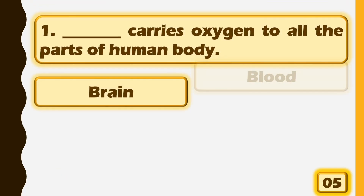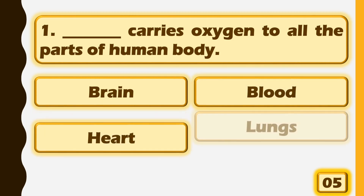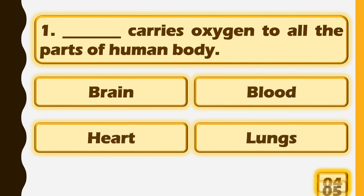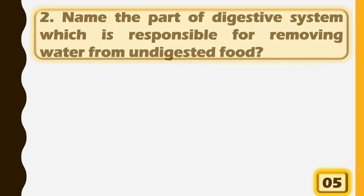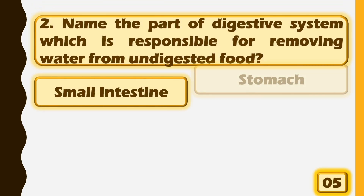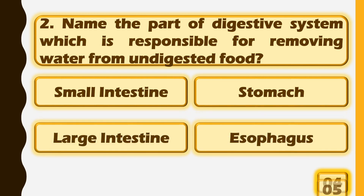Blood carries oxygen to all the parts of the human body. Name the part of the digestive system which is responsible for removing water from undigested food.